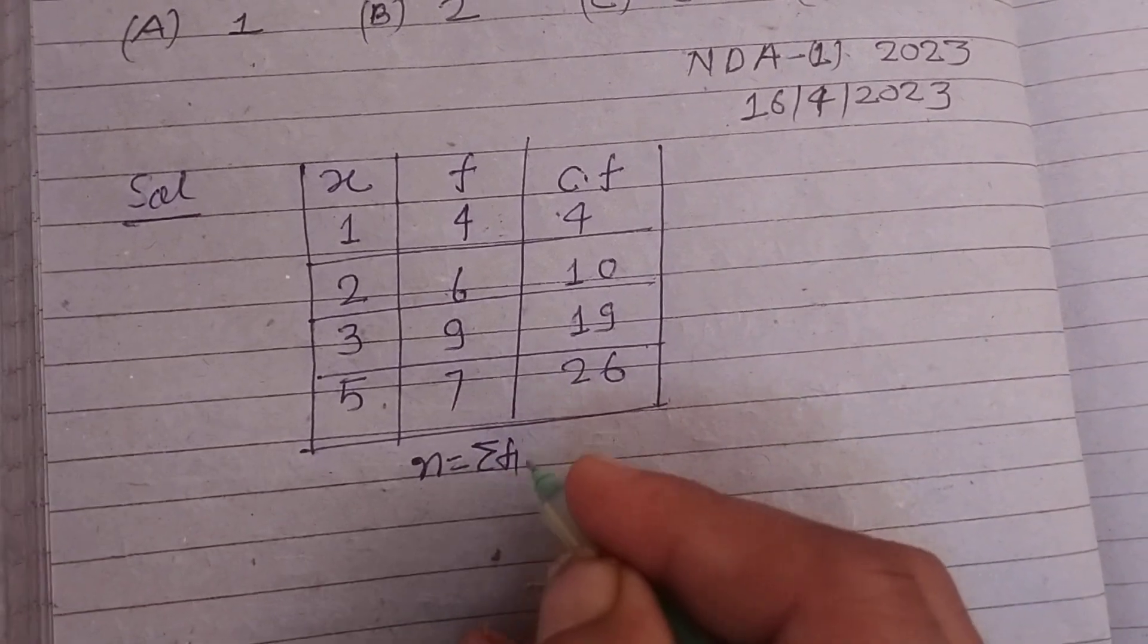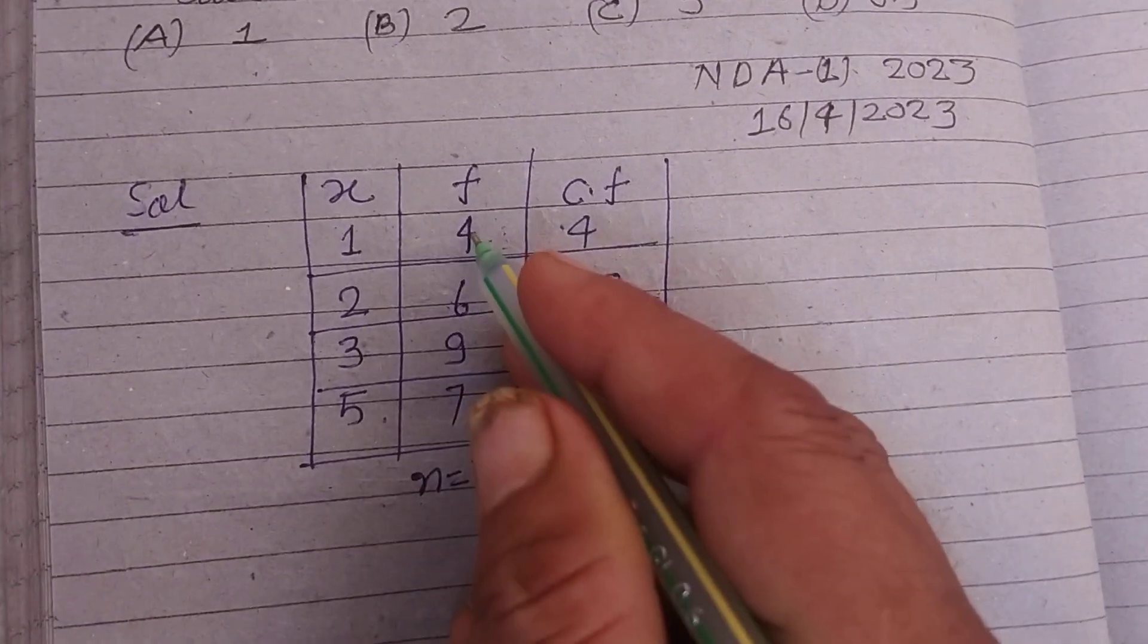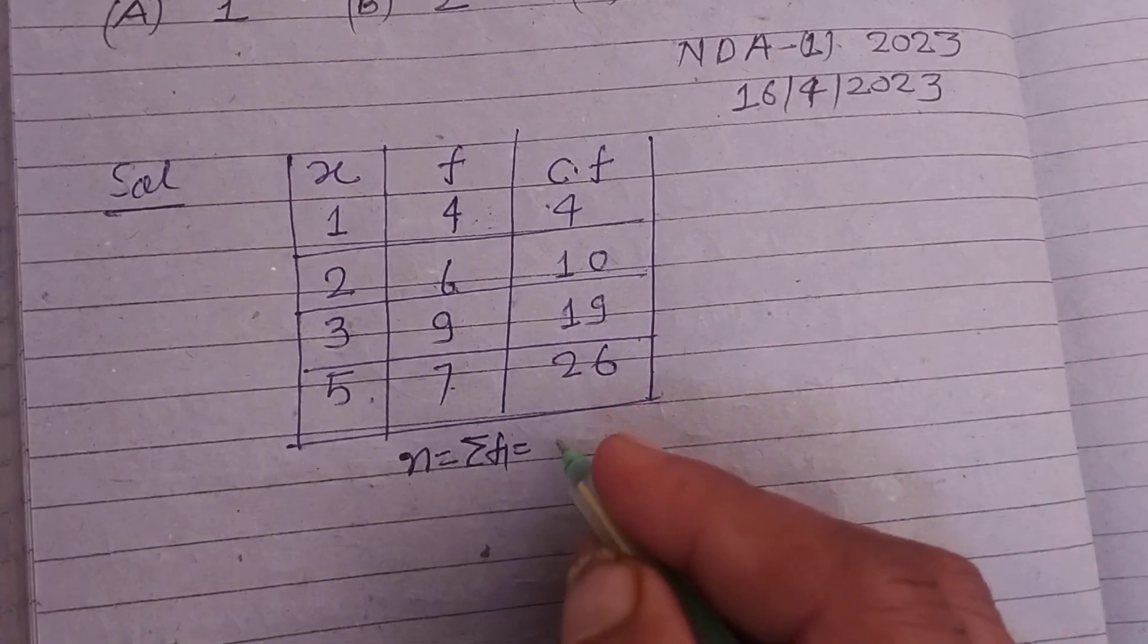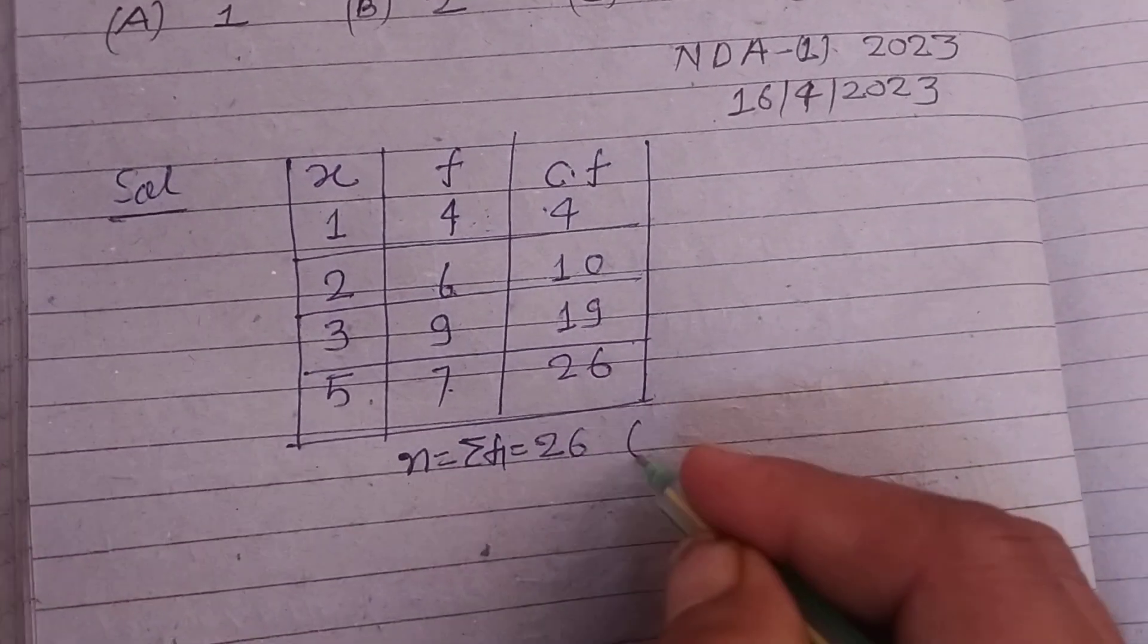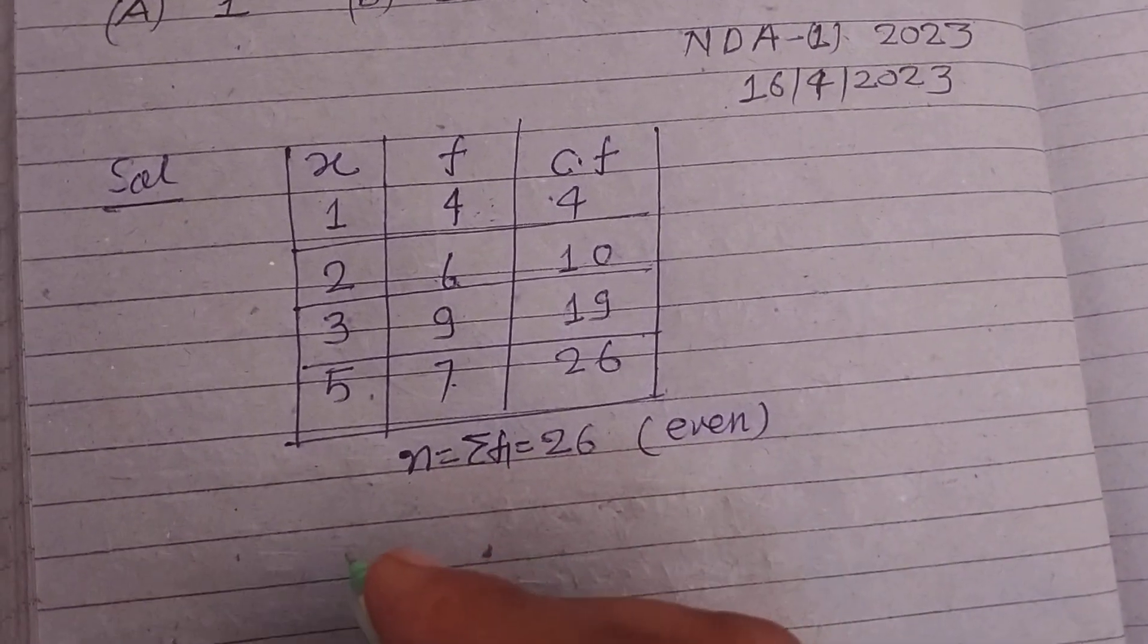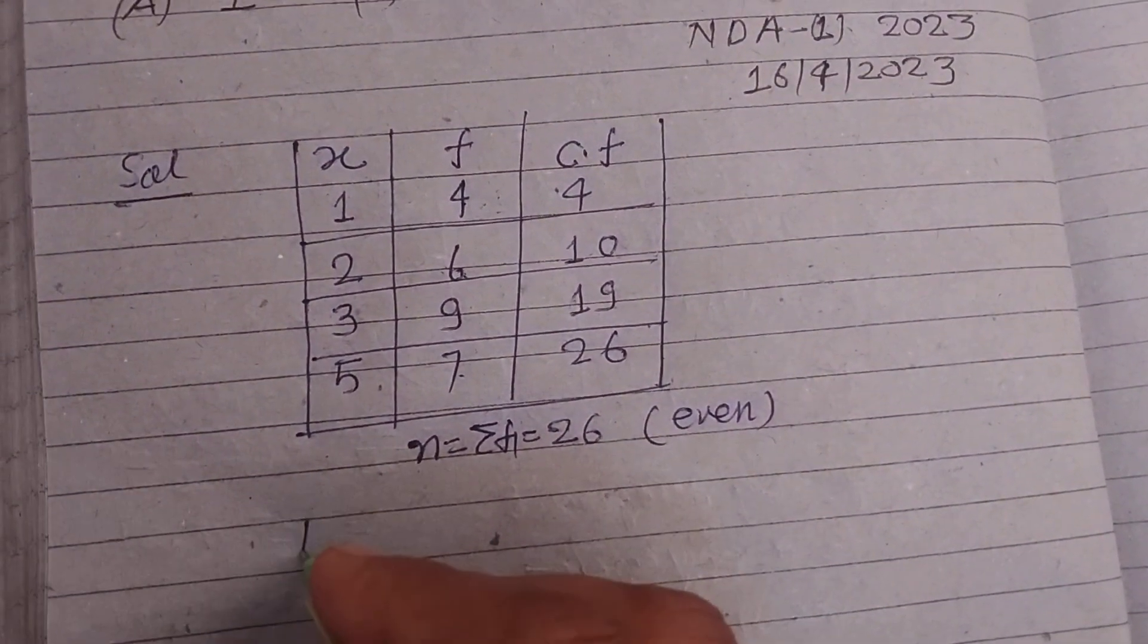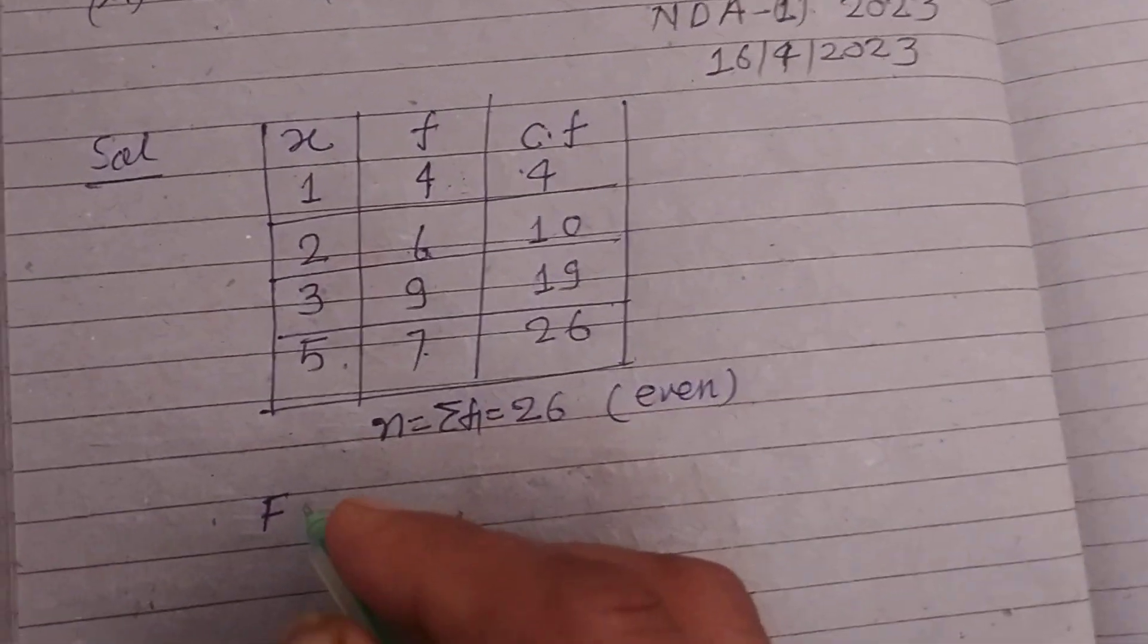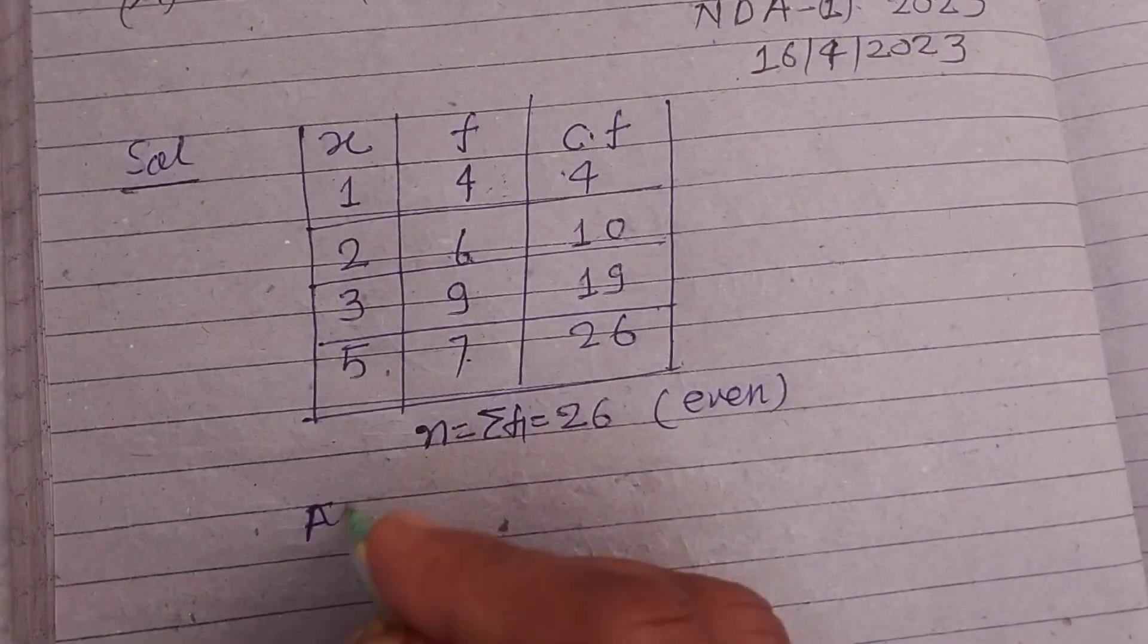The sum of terms n equals sigma f, which is 4 plus 6 plus 9 plus 7 equals 26. Since 26 is an even number, the median is...